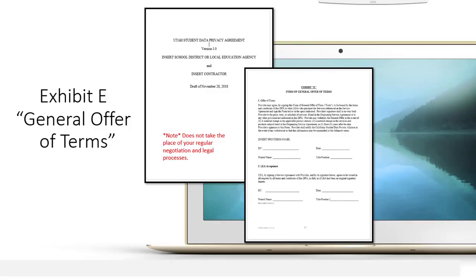Exhibit E on the DPA is really exciting — it's a general offer of terms. Basically, when a vendor signs this with an LEA, it allows for other LEAs in the state to subscribe on to the agreement. Say one district signs with an application like MobiMax — then another district could sign this Exhibit E page. All they have to do is sign it online and email it to the MobiMax representative, and now they are subscribing on to the Data Privacy Agreement and don't have to do one of their own. This means one contract could be done for an LEA in Utah and then it doesn't need to be created or negotiated again.